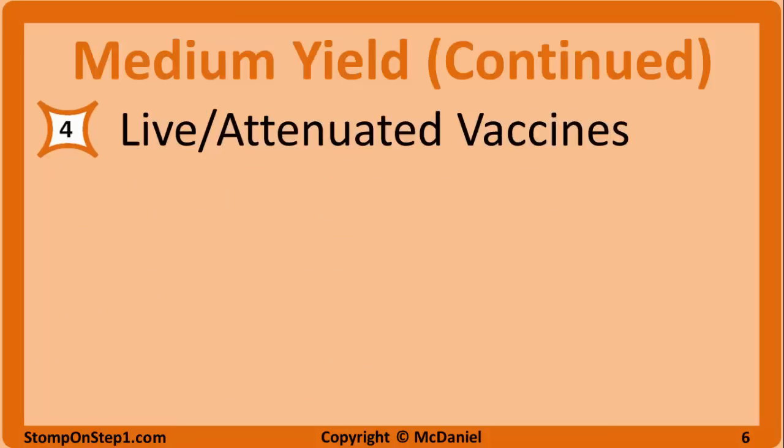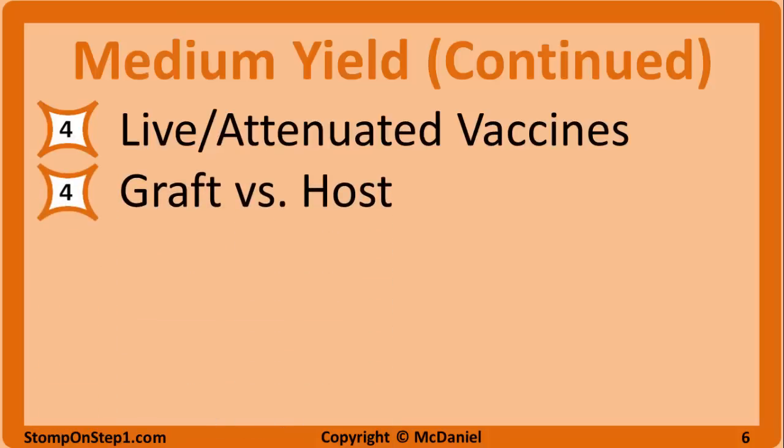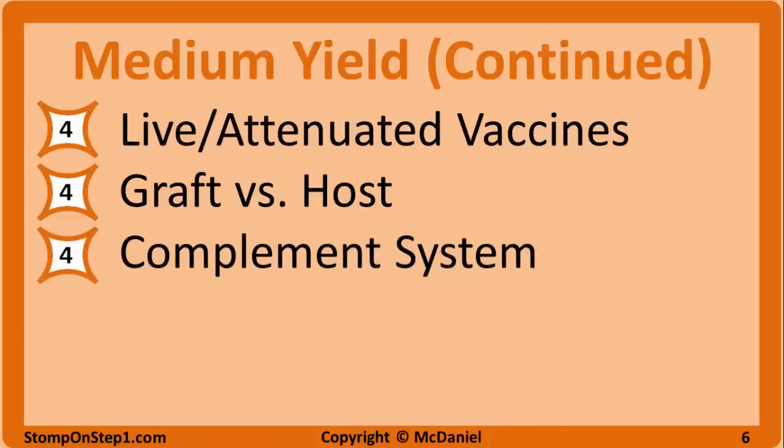Live attenuated vaccines gets a rating of 4. Know the basic definition, the type of immunity these vaccines elicit, and diseases commonly prevented with this type of vaccine. Graft versus host disease — donor white blood cells attack the recipient; be able to identify the clinical picture, most often in somebody with a bone marrow transplant. Complement system — most questions will be on C5A, but you may also see questions on C3A or the MAC complex; you don't need to memorize the entire cascade, just the key functions. You may also want to look at complement deficiencies.